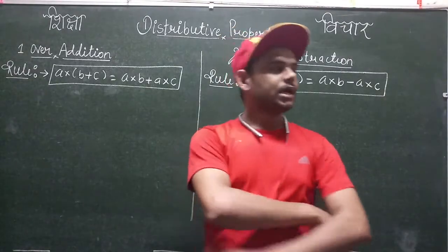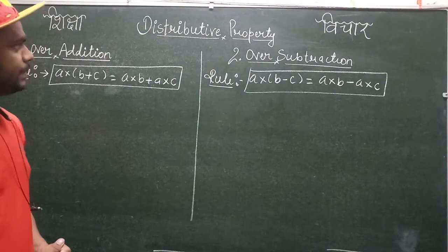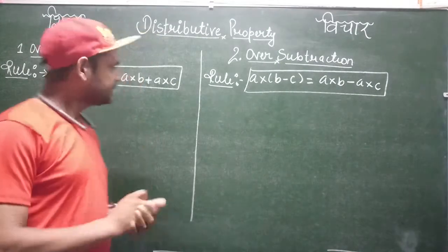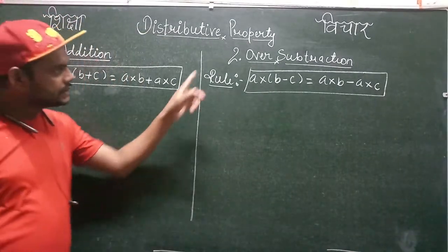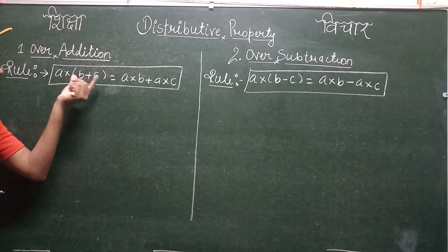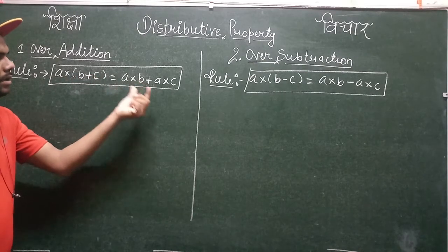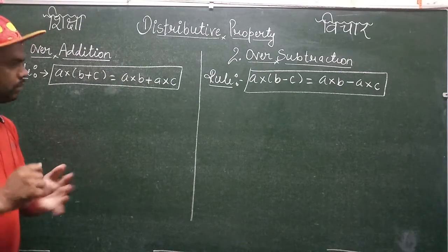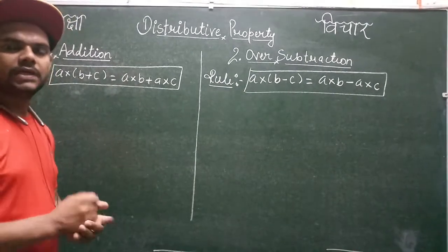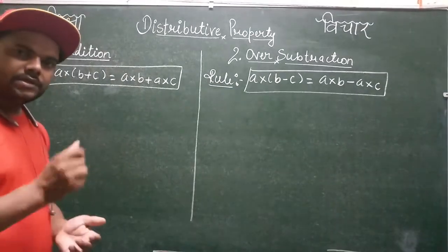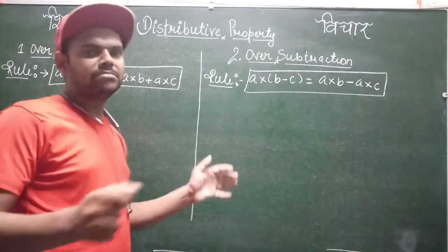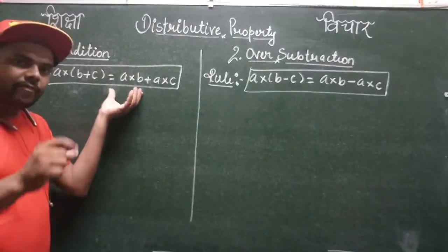I am Santosh and in this video I am here to explain the distributive property over two cases. The first one is over addition and the second one is over subtraction. The rule is: a multiplied by (b + c) equals a multiplied by b plus a multiplied by c. Here a, b, and c are real numbers — they can be natural numbers, whole numbers, integers, rational, or irrational numbers.